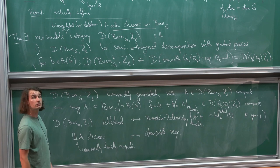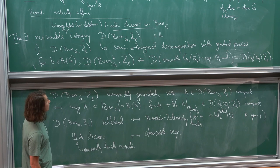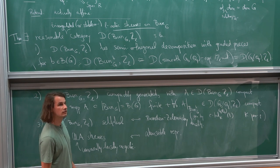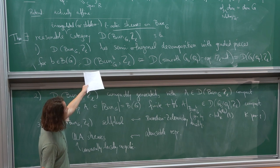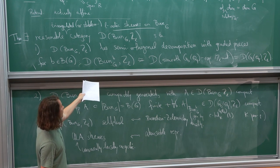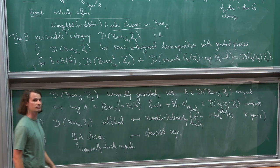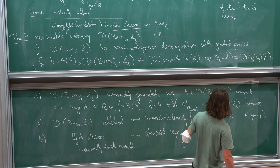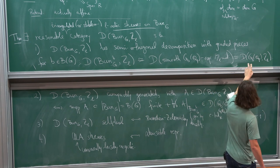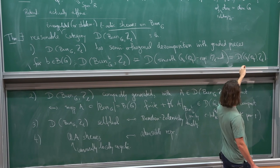A question from the audience: whether the semi-orthogonal decomposition enriches into a stable recollement. The answer is yes, in some sense it's a split semi-orthogonal decomposition, because it has more adjoints. The category on each stratum re-embeds into the big category either by j_lower_star or by j_lower_shriek functor. Another question: whether the compact objects are also internally compact. The answer is no — this is not true at all in representation theory, because if you tensor two compact objects, then this is a huge thing.